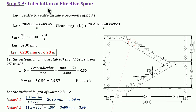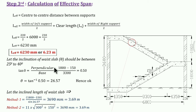Step 3: Calculation of effective span. For a dog-legged staircase, the effective span is the center-to-center distance between supports. L_eff = (width of left support ÷ 2) + clear length + (width of right support ÷ 2) = (230 ÷ 2) + 6000 + (230 ÷ 2) = 115 + 6000 + 115 = 6230 mm = 6.23 meter. Step 3 effective span complete.